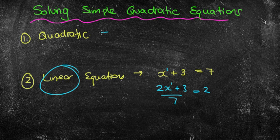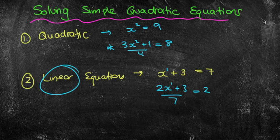So what is quadratic? Well, quadratic is things like x squared equals 9, where the power is actually 2. It could be 3x squared plus 1 over 4 equals 8, although that one would be very challenging to solve.